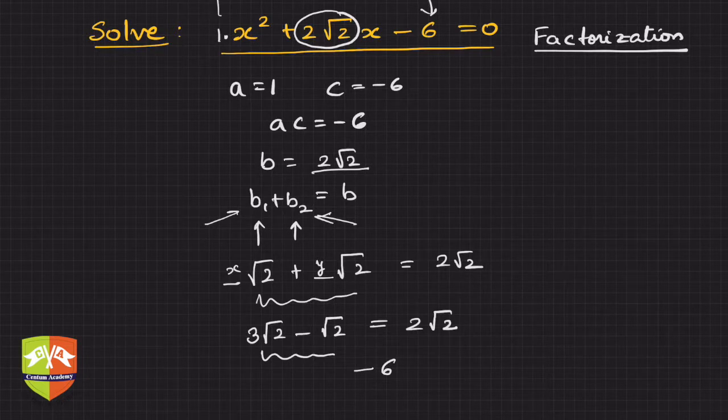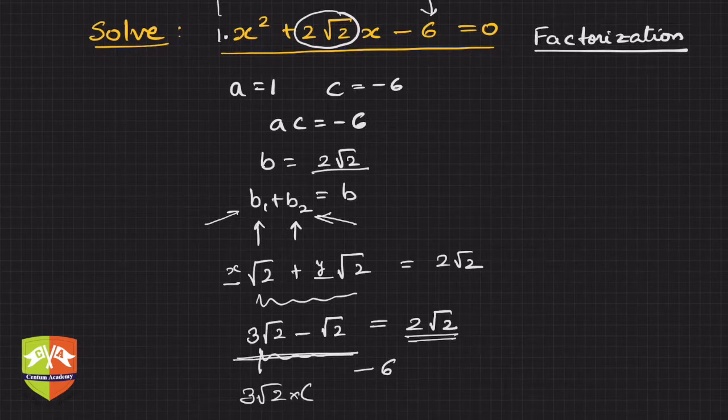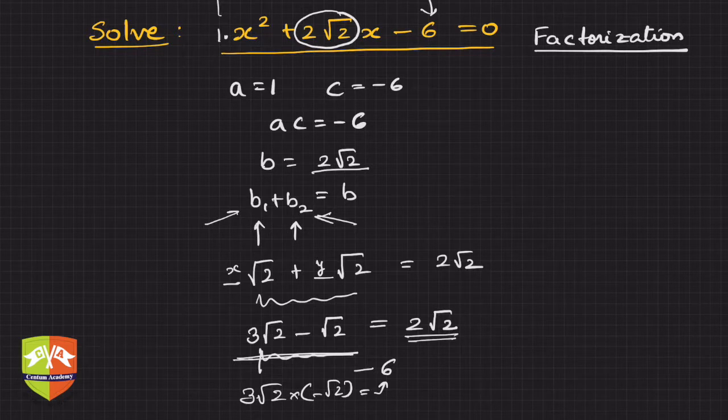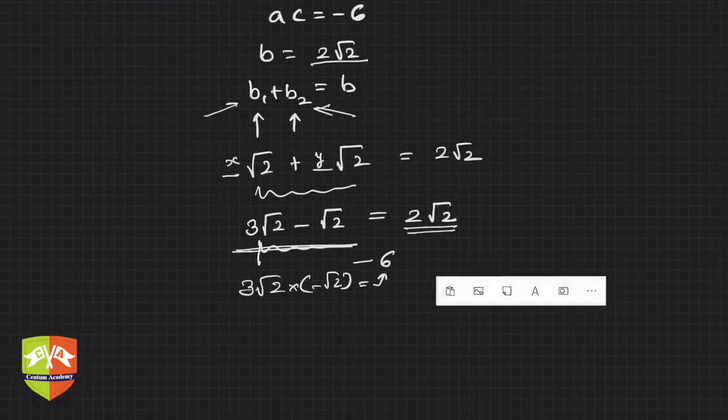You will learn this by more practice, but this is how it has to be done. And then if you split those like this, 3√2 - √2, it works. Why? Because 3√2 - √2 is 2√2, and 3√2 times -√2 is -6, which we wanted as the last term. So hence, how can we do this?